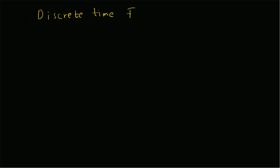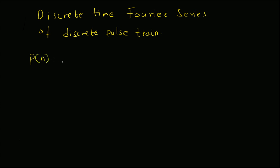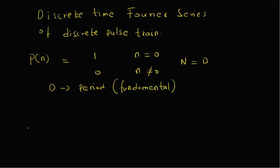Hello, welcome. In this short video, let us look at the discrete time Fourier series of the pulse train. Pulse train means basically a series of unit samples — we can also call it a discrete impulse train. So p of n equals 1 for n equal to 0 and equals 0 for n not equal to 0, with period d, where d is the fundamental period. Graphically, p of n can be represented as: we have 1 at n equal to 0 and zeros on either side.